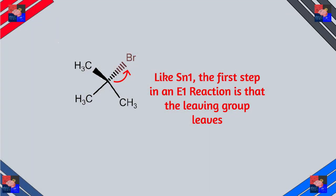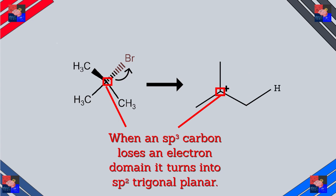The E1 reaction is very similar to the E2 reaction, and therefore the E1 reaction's first step is to remove the leaving group. In this example, bromide is very stable by itself, so the leaving group leaves, leaving a carbocation on the molecule. This is an sp3 carbon, and whenever a carbon loses an electron domain from sp3 to sp2, it turns to sp2 and has a trigonal planar geometry.